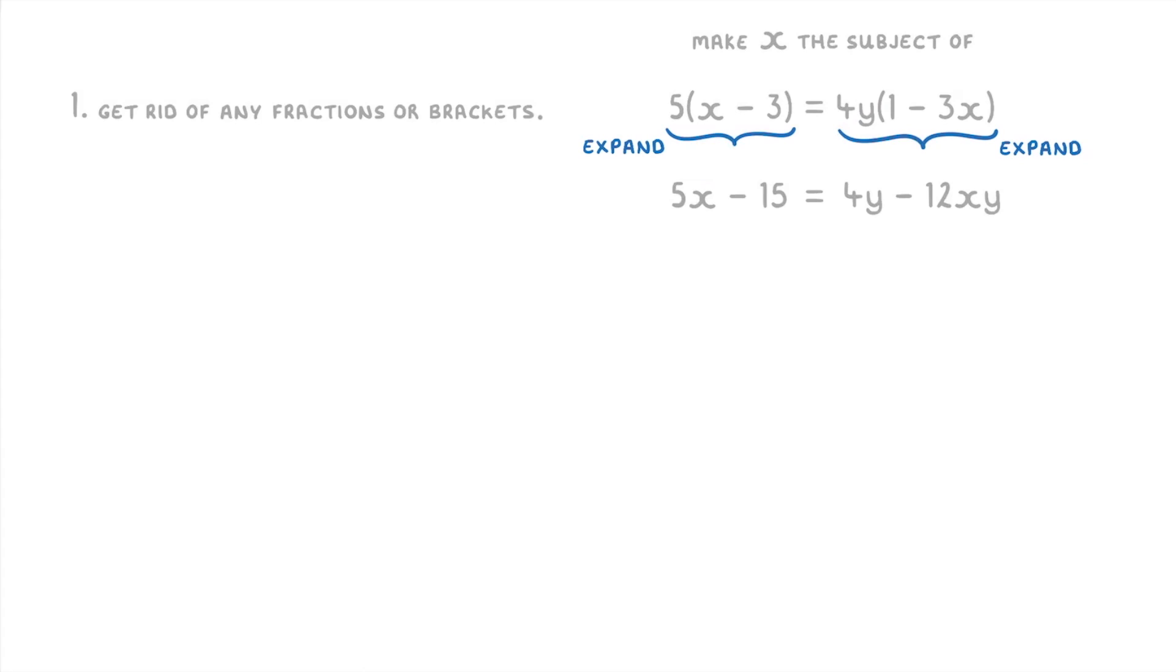At this point we can move on to step 2 where we have to collect all the subject terms on one side of the equation and all of the non-subject terms on the other side. Now that's a bit of a complicated sentence so let's break it down. A subject term is just any term that has the subject letter in it, so because we're trying to make x the subject, any term with an x in it will be a subject term. So out of our four terms, the 5x and the 12xy will both count as subject terms.